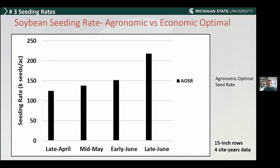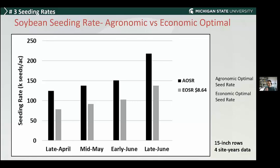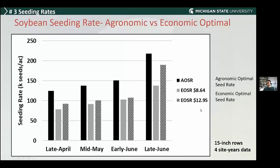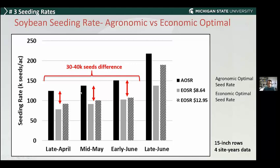This data shows our work over the last three years comparing agronomic versus economic optimal seeding rates. The agronomic optimum — maximizing yield potential — goes higher with a delay in planting, as one would expect. However, when we look at the economic optimum including seed cost and price, those numbers are much lower than the agronomic optimum. Even using November futures prices for this year, the economic optimal numbers are still much lower — there's a 30 to 40K difference — especially until early June. Late June is where it does benefit to increase seeding rate.